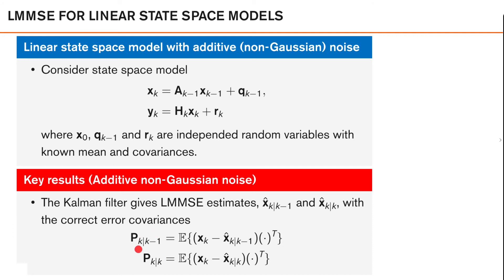So for linear and Gaussian models the Kalman filter computes the MMSE estimates, but if we relax the Gaussian assumption, the Kalman filter is still the best linear estimator. However, there are probably non-linear estimators — non-linear functions of the data — that can give better estimates, but they will likely be more computationally demanding and require more knowledge about the noise processes.